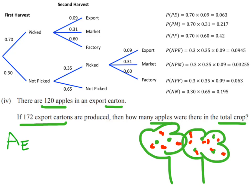I want the total number of export apples. The capital A stands for apples and the little e is the export ones. I know I've got 172 cartons and in each carton there are 120 apples. So that tells me in total there are 20,640 export apples. That's what we've got so far.